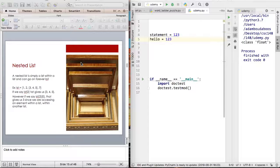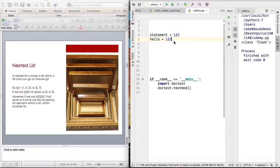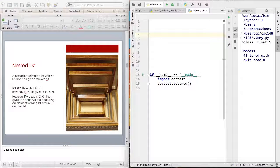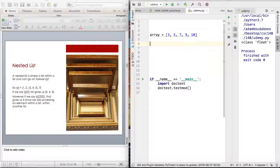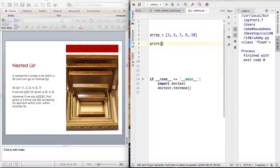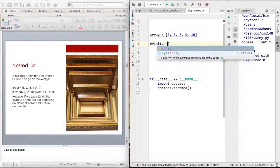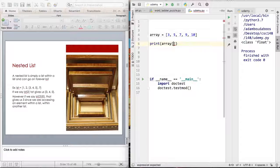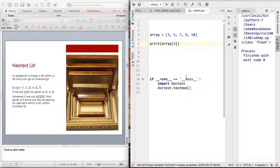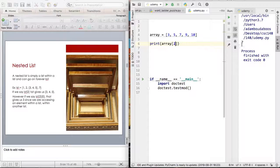Before I get into nested lists I want to do some practice of list slicing. So let's say I say array equals 3, 5, 7, 9, 10. And then I want to print whatever my list slicing will return back. I want to access the third item of the list which is going to be at index 2. I'm not saying the third index. So let's print this. It's going to give you 7.